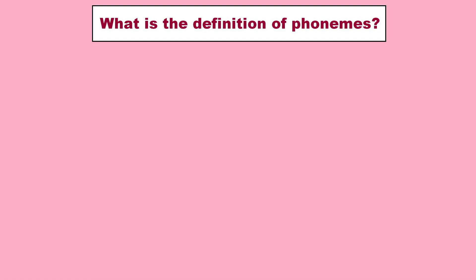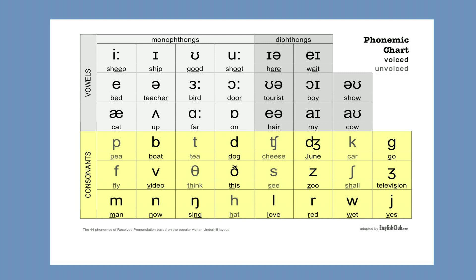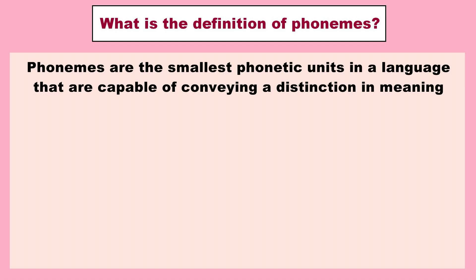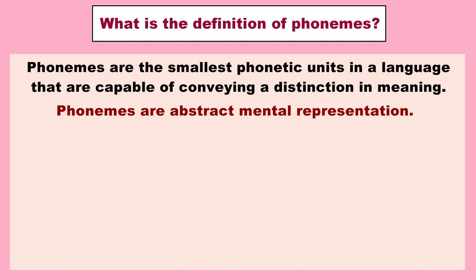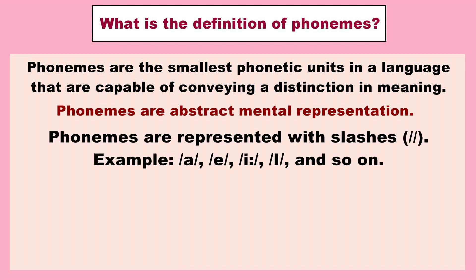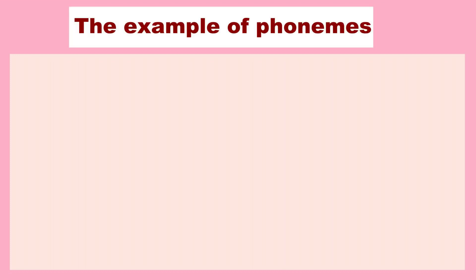Phonemes are the symbols that you see on the phonetic chart. They are the smallest phonetic units in a language that are capable of conveying a distinction in meaning. Phonemes are abstract mental representations — they are already stated in our mind but we don't pronounce them yet. Phonemes are represented with slashes. Here is an example of phonemes.